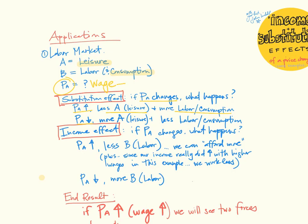And vice versa. If price of leisure were to drop, we would find ourselves doing more leisure and less of the alternatives. So in general, the substitution effect is when your wage goes up, you're going to do less leisure and more work.